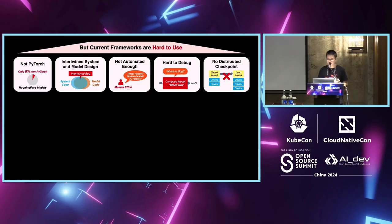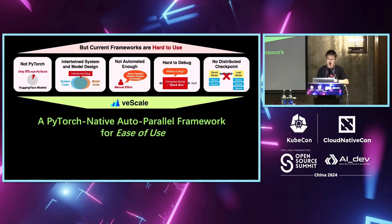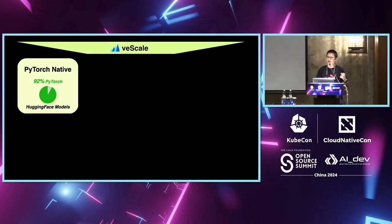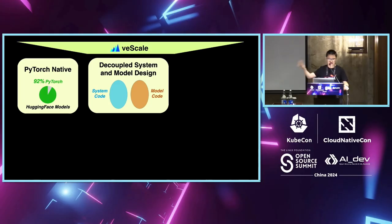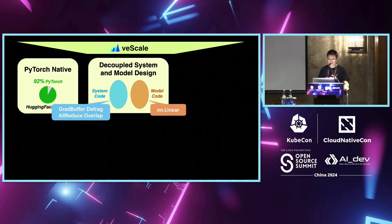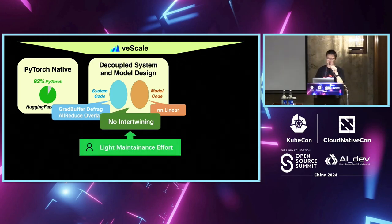To address all five challenges, we propose V-Scale — a PyTorch-native parallel training framework that mainly targets ease of use so that we can quickly develop our models. It supports PyTorch-native models, and most importantly, it decouples the system and model design. Your model code stays in the model file and the system code is in another file — they are completely decoupled. Changing one does not affect the other, so there will be no intertwining bugs, which means lighter human maintenance efforts.